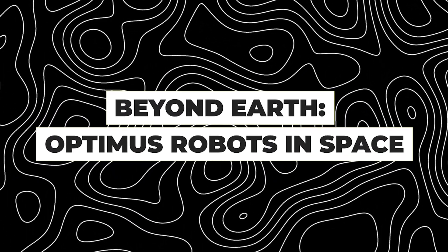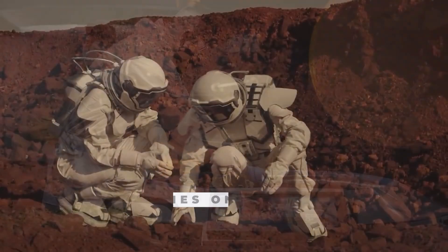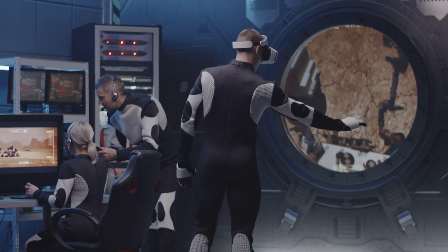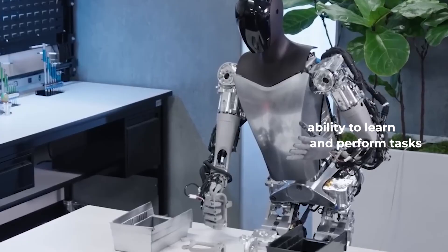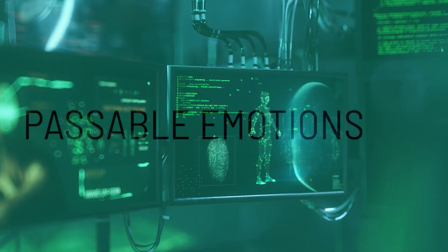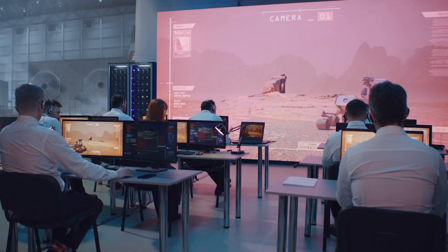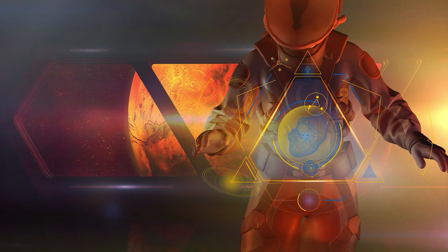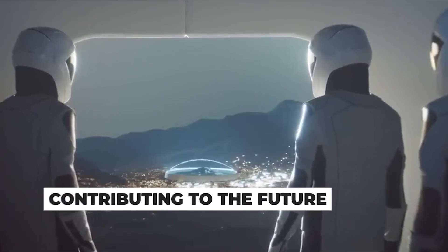Considering Elon Musk's involvement in SpaceX and the pursuit of establishing colonies on Mars, the deployment of Optimus robots in space becomes a fascinating prospect. With their ability to learn and perform tasks autonomously, these robots could be invaluable in aiding humans in the construction and development of extraterrestrial habitats. This ambitious vision expands the horizons of what Optimus Robot could achieve, with the potential for millions of these robots contributing to the future of interplanetary colonization.